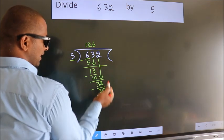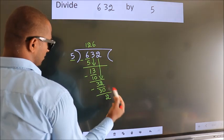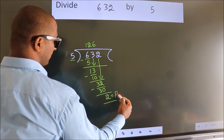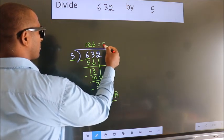No more numbers to bring down. So we stop here. This is our remainder. This is our quotient.